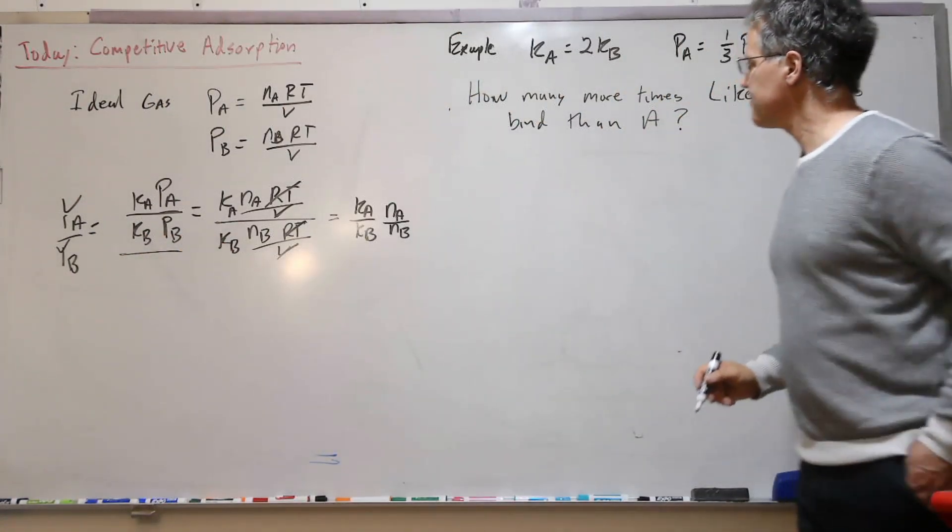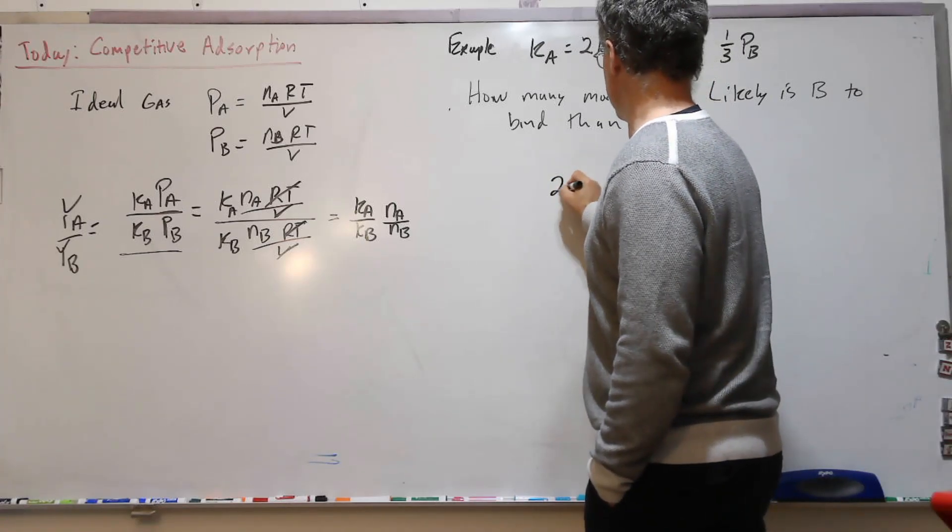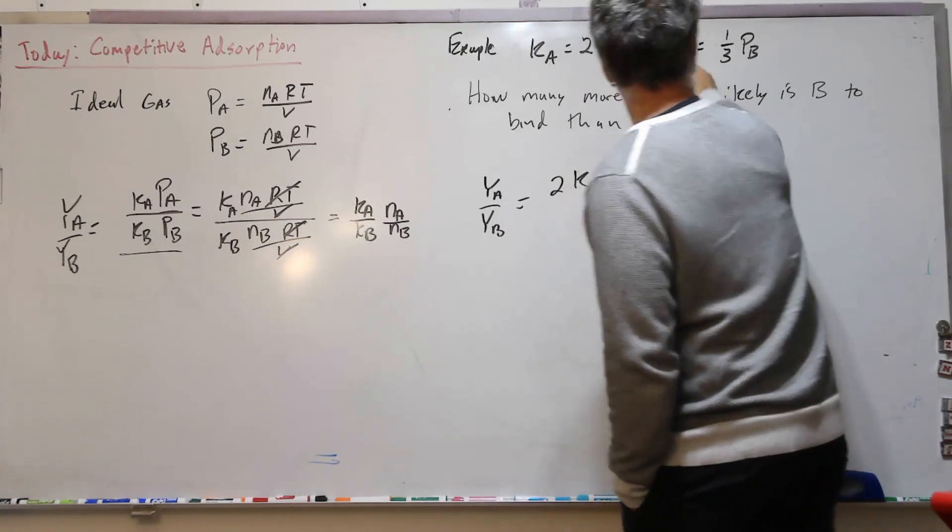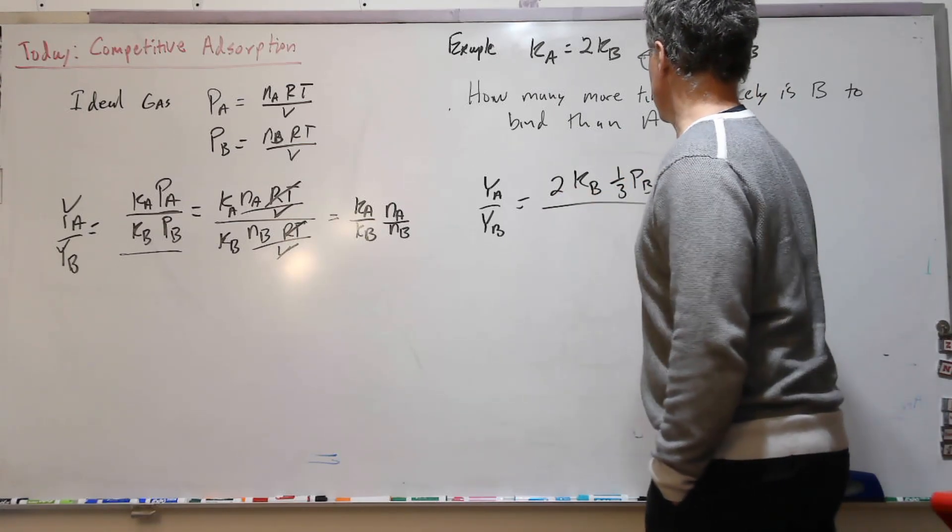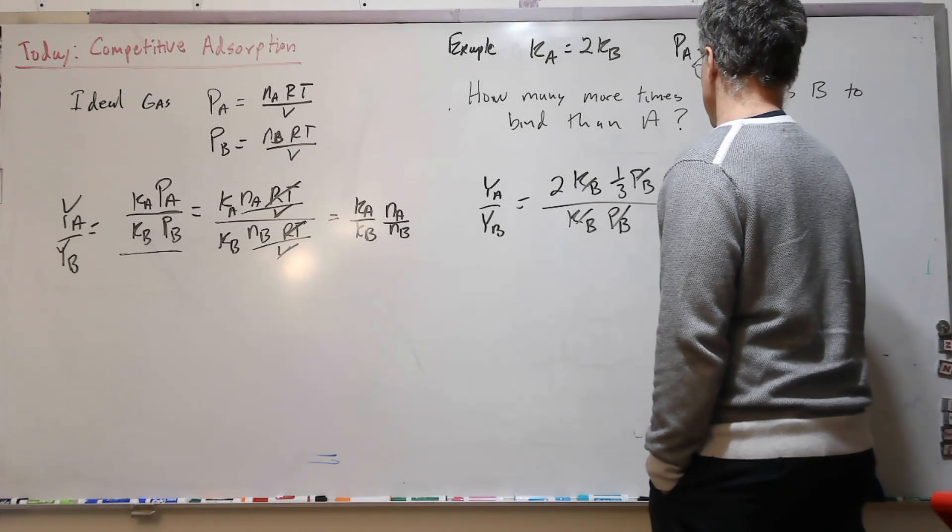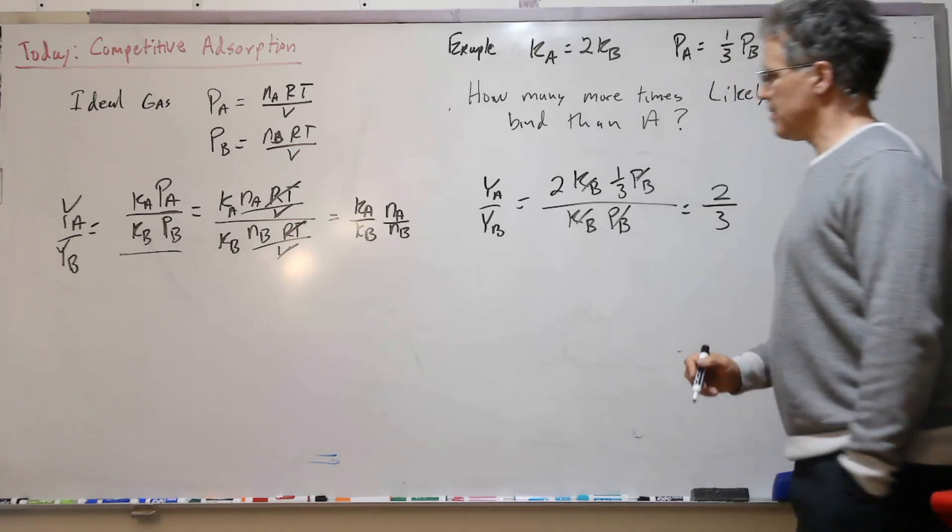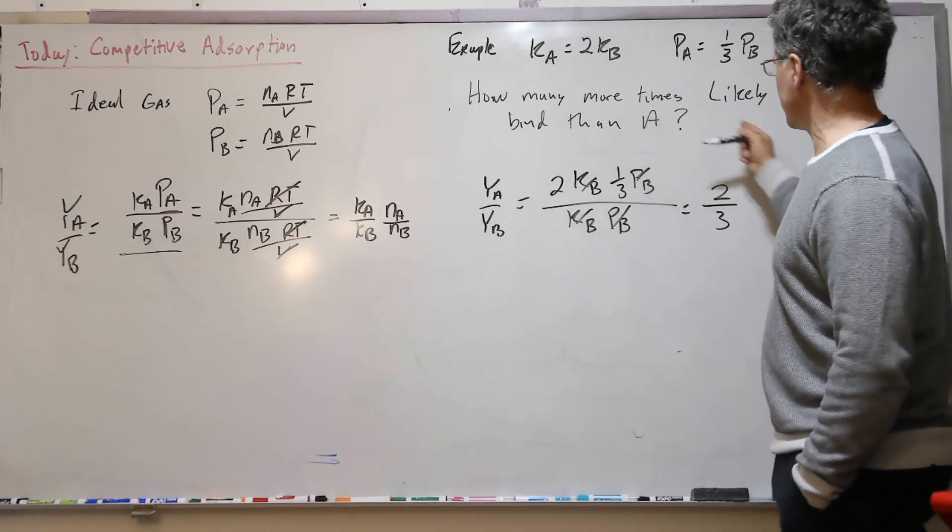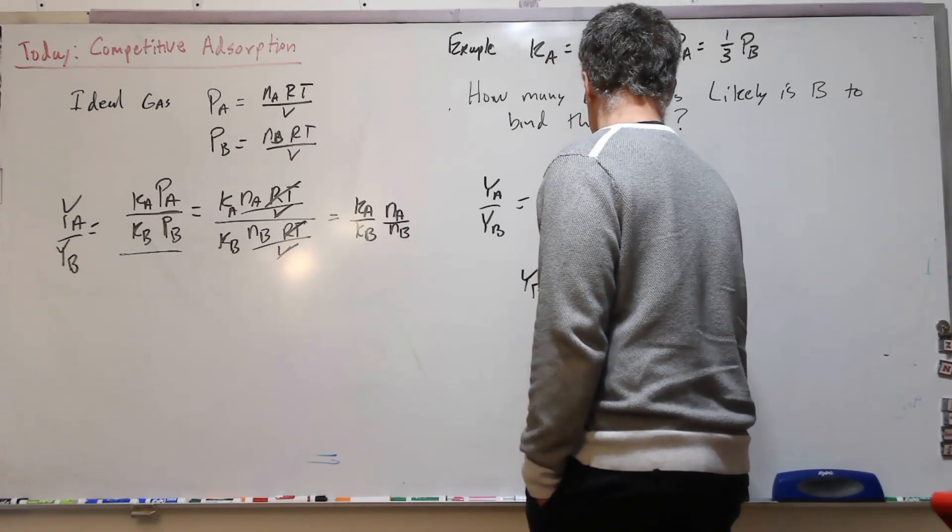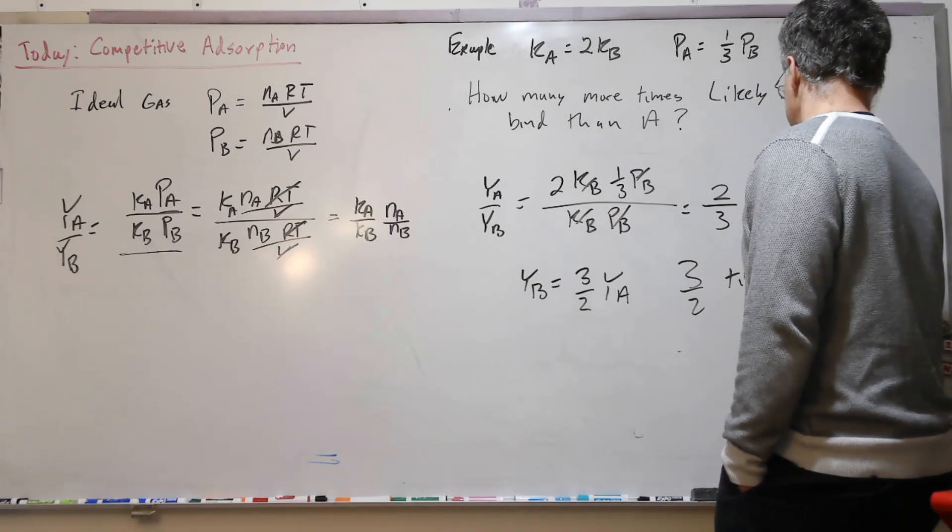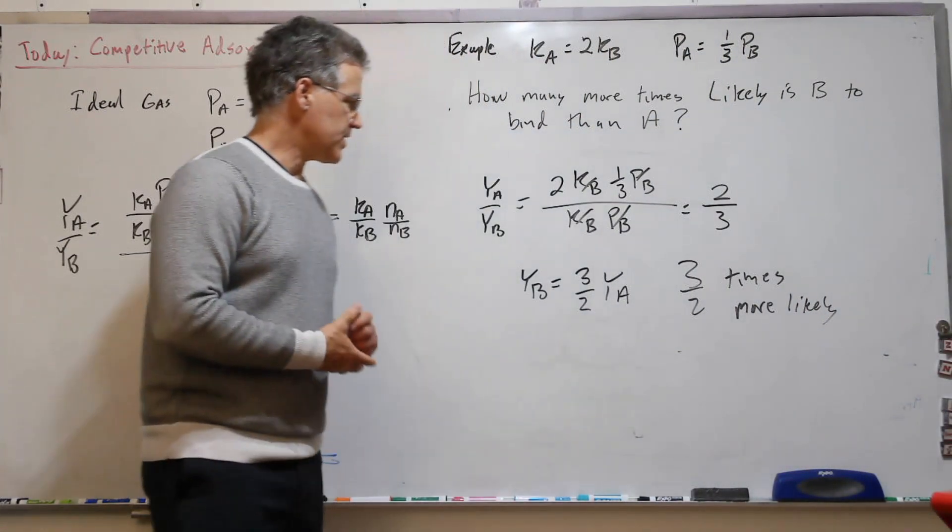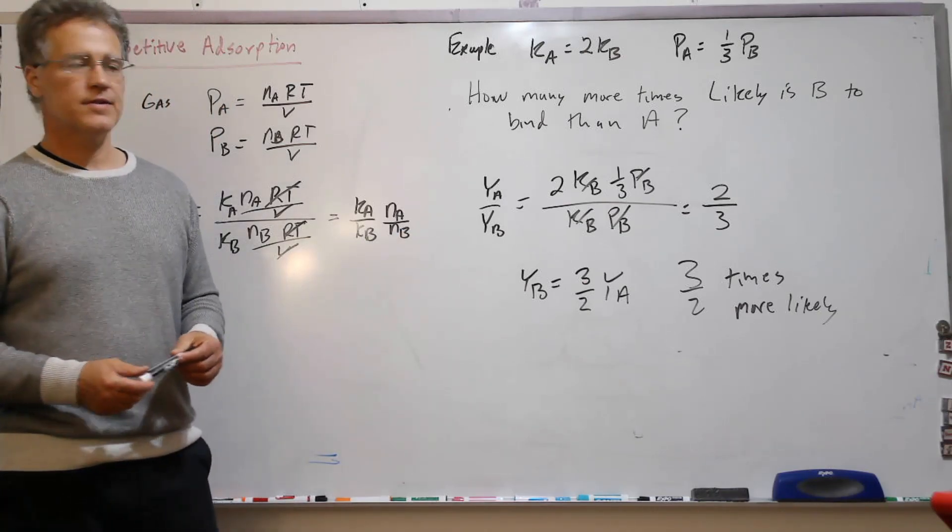Well, let's use this formula here. So K_A is 2 K_B, and P_A is one-third of P_B. So to answer our question, then, Y_B equals 3 halves of Y_A. So 3 halves times more likely. So there's an example with some numbers here for competitive adsorption.